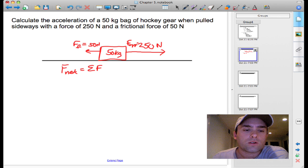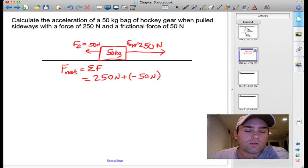The first thing that you need to do is calculate F net. So F net is the sum of all the forces. The two forces we have are the force that's dragging the bag and the frictional force. We can assign everything to the right a positive value and everything to the left a negative value. So that would mean that the F net is 250 Newtons plus a negative 50 Newtons, which would mean that the F net equals 200 Newtons.